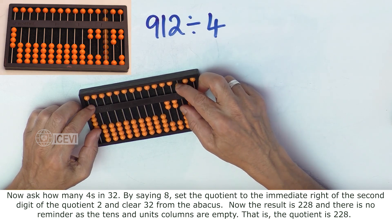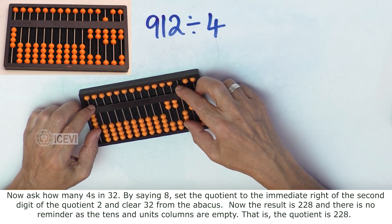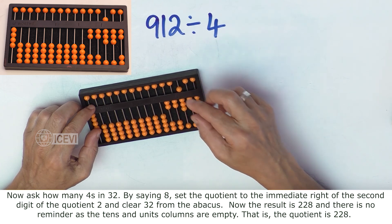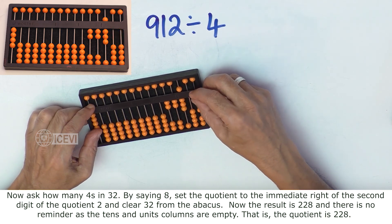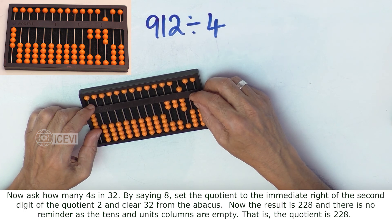By saying 8, you set the quotient 8 to the right of 2, and then clear the 32 from the abacus.